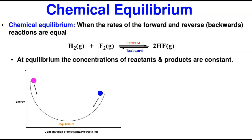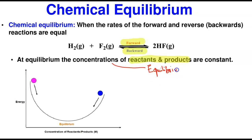Chemical equilibrium is when the rate of a forward reaction and a reverse or backward reaction are equal. Since we started talking about chemistry, we've never talked about the fact that a reaction can also go backwards — a situation whereby the reaction can go from the product to the reactant. At equilibrium, the concentration of the product and the reactant are constant; that particular concentration is what we call the equilibrium concentration.